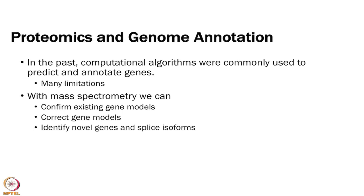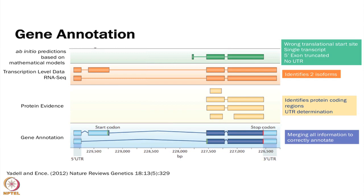We can use mass spec data to confirm gene models, to correct gene models, and to identify novel genes and splice isoforms. Here is an example: the green represents our predictive models, which take the sequence and predict what is actually an exon. You can see the actual annotation is missing a whole lot of things — it does not have the right transcriptional start site, it only has one transcript.